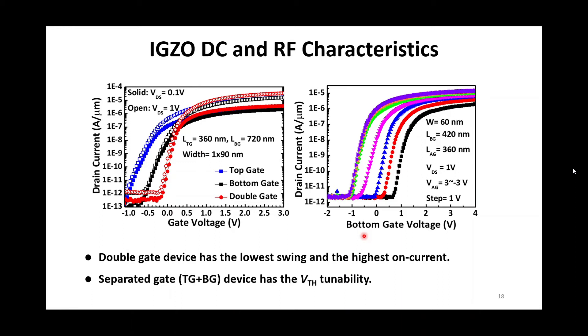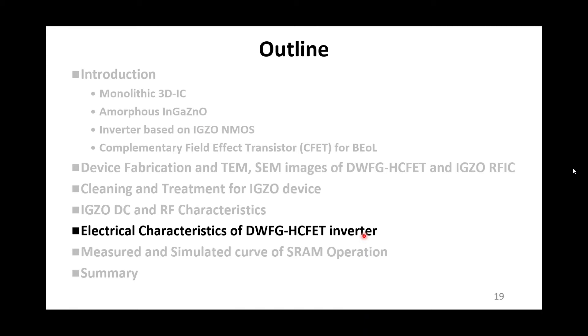The X axis of the right figure is the bottom gate bias. When we apply the voltage from 3 to minus 3 on the top gate, which is also considered as the adjusted gate in HC-FET, the threshold voltage shifts to positive voltage slightly.